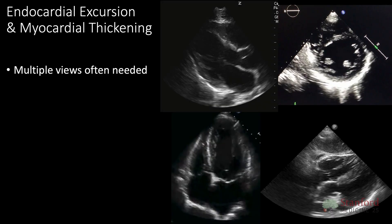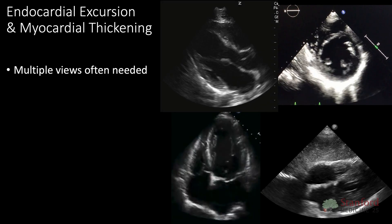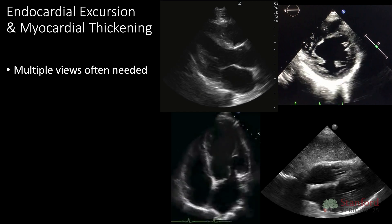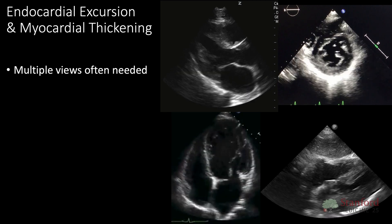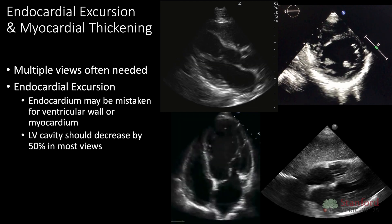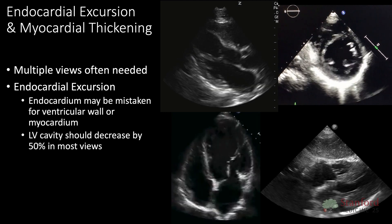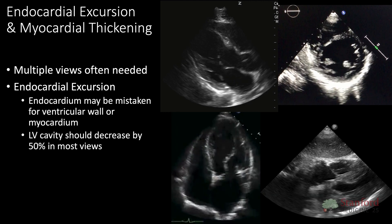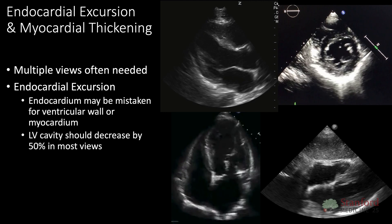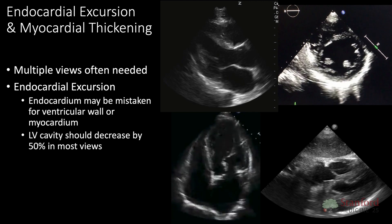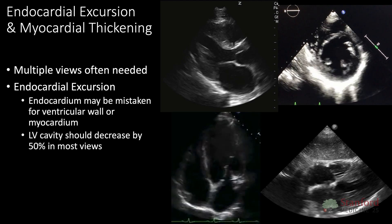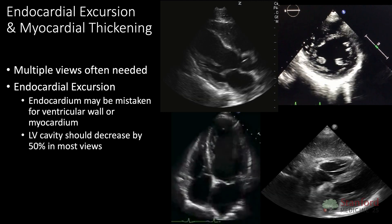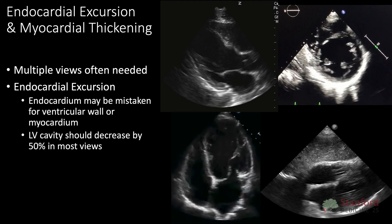When you're thinking about endocardial excursion and myocardial thickening, you'll often need multiple views — one view is often not sufficient to evaluate the systolic function of the LV. When assessing endocardial excursion, keep in mind the endocardium may be mistaken for the ventricular wall or myocardium. It's very important to track how the endocardium is moving in multiple views. This is a more qualitative assessment — you're looking at the LV cavity and how much it increases or decreases between systole and diastole. Generally, you want that cavity to decrease about 50% between diastole and systole.